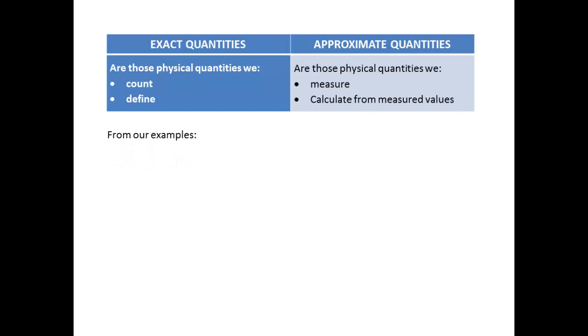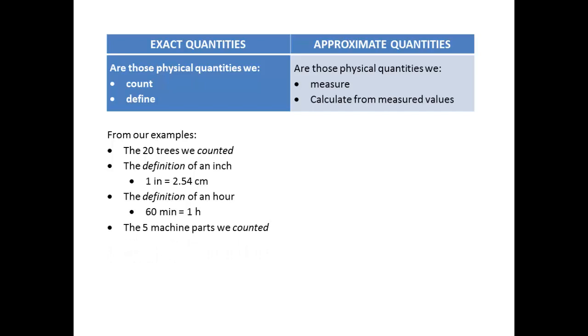Using our examples, we can see that the 20 trees that we counted, well that's a count so it's exact. The definition of our inch—one inch is 2.54 centimeters—that's a definition so that's exact. The definition of an hour—60 minutes is the same as one hour—so that's exact. And our five machine parts, since we counted them, that five is also exact. And then finally our 60 parking spaces, we also counted those so they too are exact.